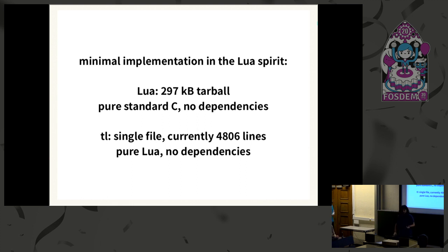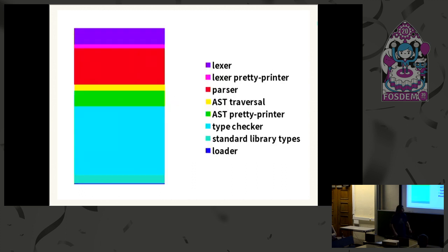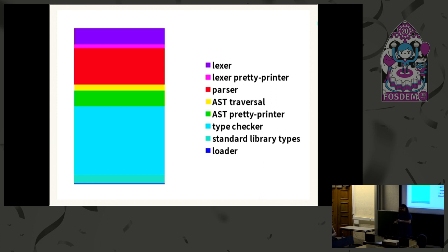TL is a source-to-source compiler, or transpiler — the output is essentially your input without the types. The source code breakdown includes a lexer, a pretty printer for debugging the lexer, a hand-written recursive descent parser (probably could be smaller with a parser generator, but I wanted to keep everything self-contained), a small AST traversal implementing a visitor pattern used for the pre-printer that dumps the output file, the type checker which is the bulk of it, definitions of types for the Lua standard library (still incomplete), and a small loader that allows loading TL files with require from Lua code.